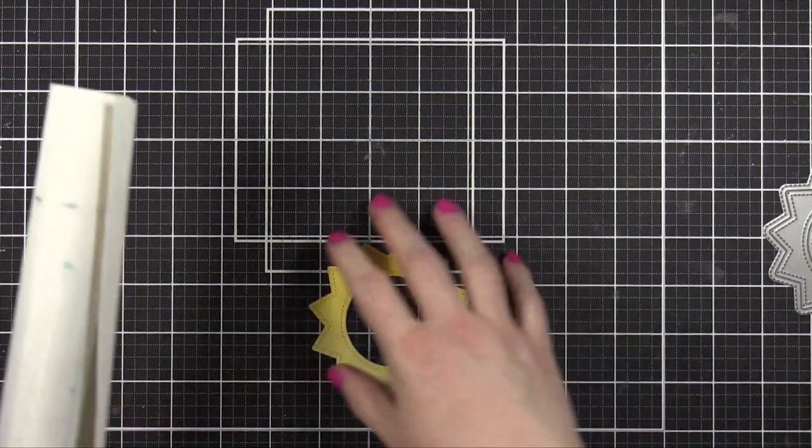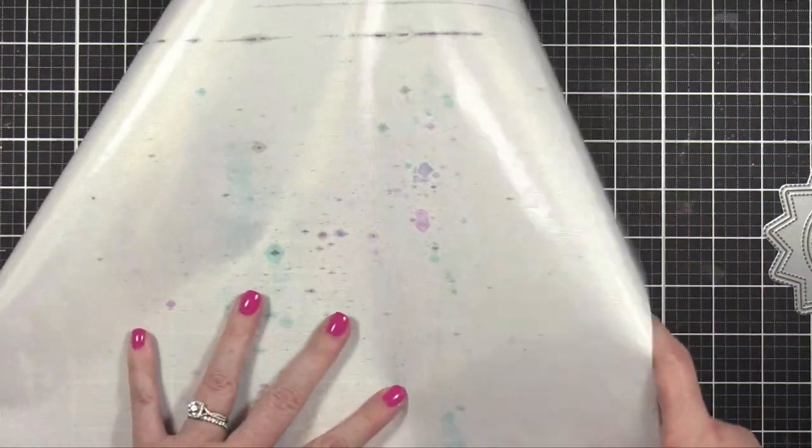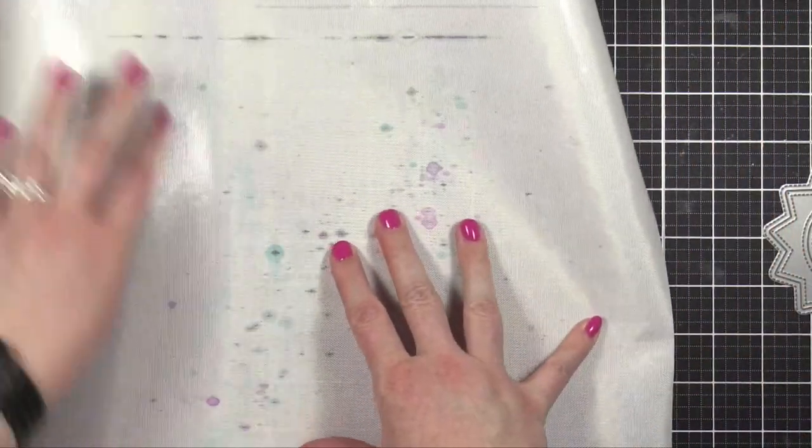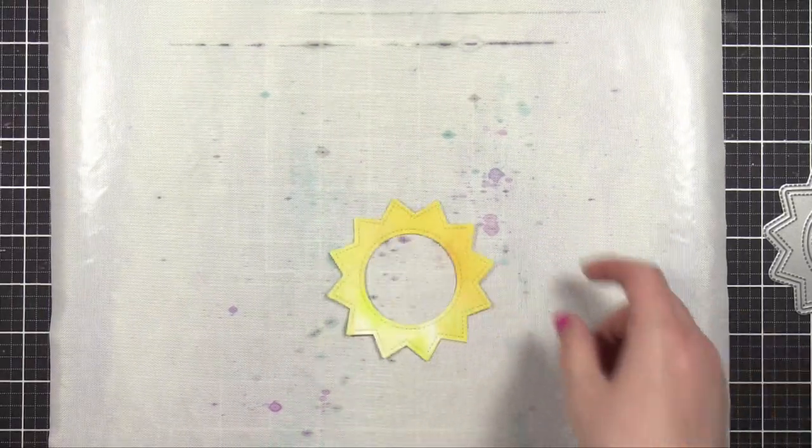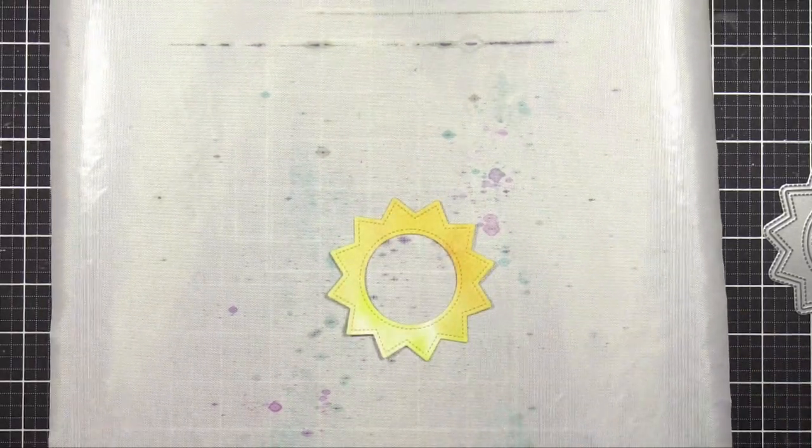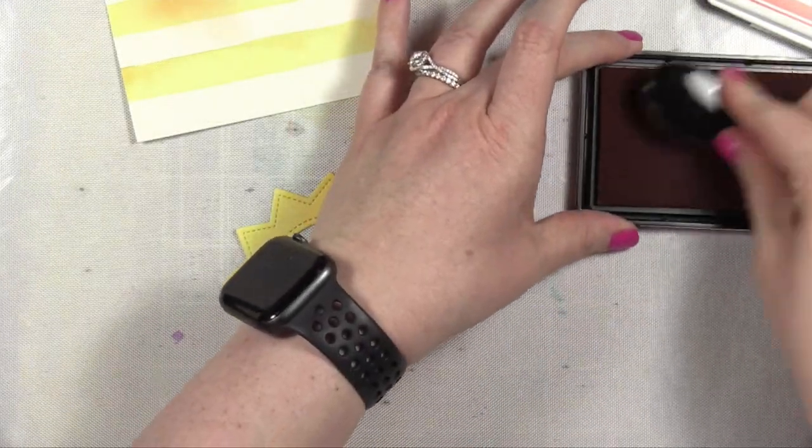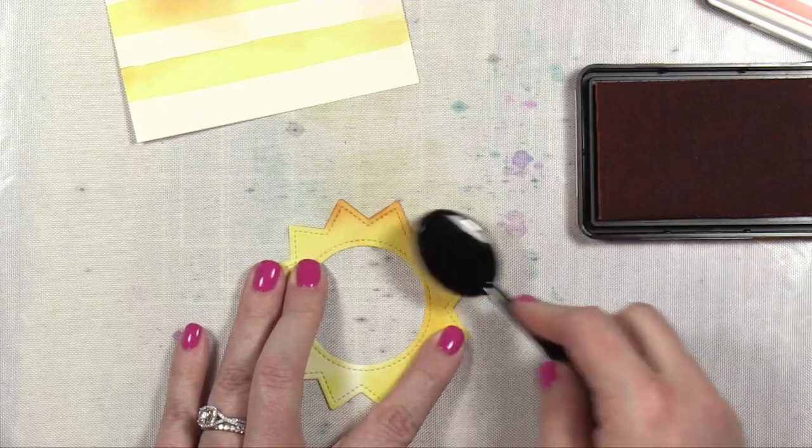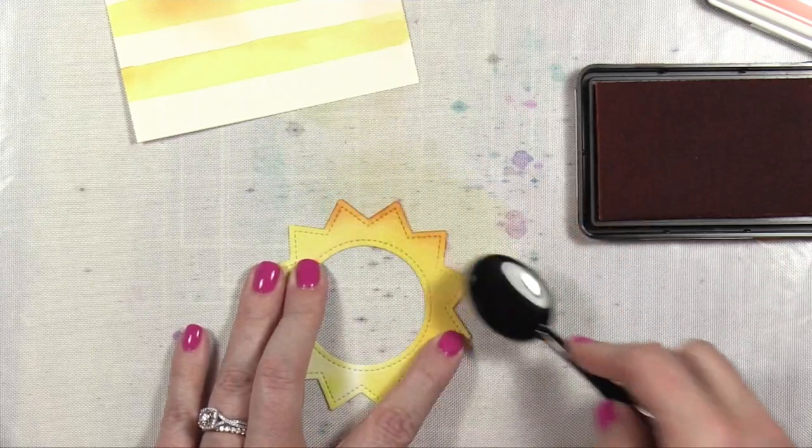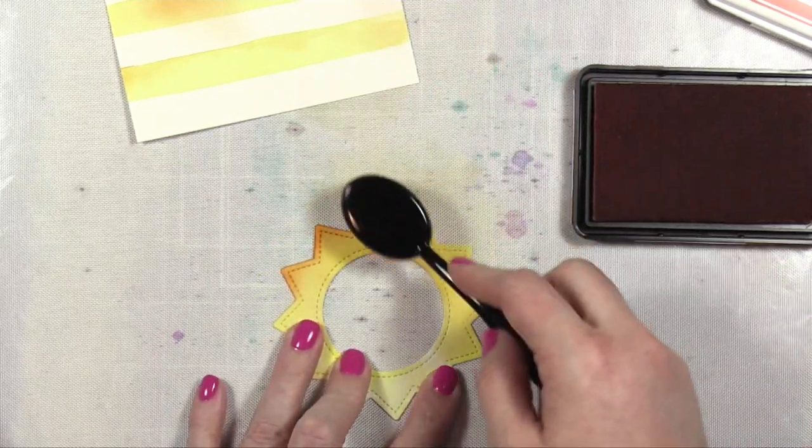So now I'm going to kind of change up this sun shape. I'm first going to lay down a Tonic Easy Clean Matte so I can do a little bit of ink blending onto the edges of my sun shape, the sun frame, so that I can have that kind of stand out away from the stripes. I have a Lawn Fawn ink color here. This is called Fake Tan. It's the most perfect orange. And I'm just very lightly blending on a little bit of that color on the edges.